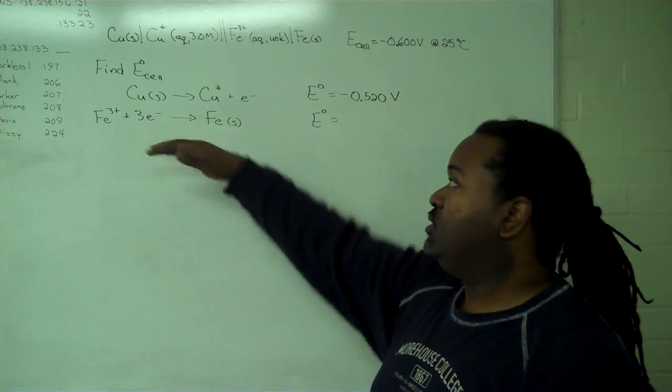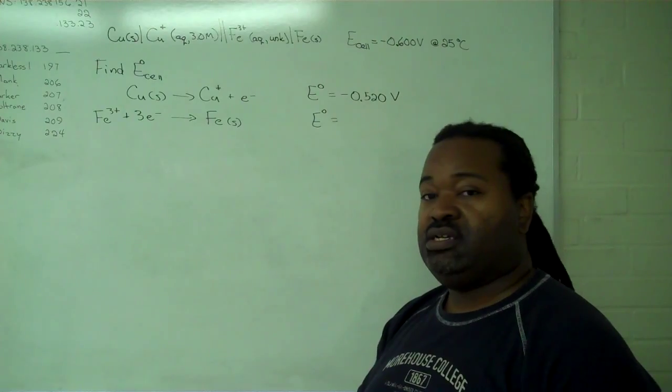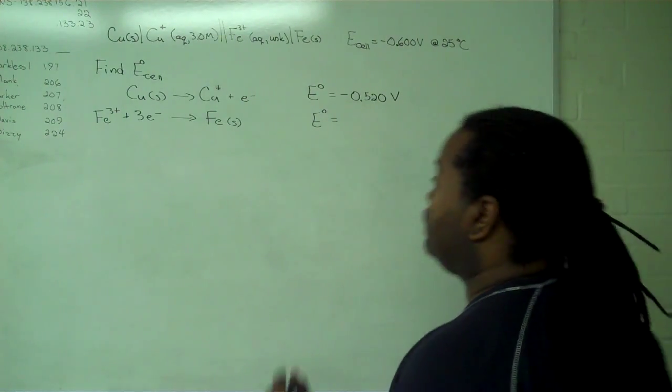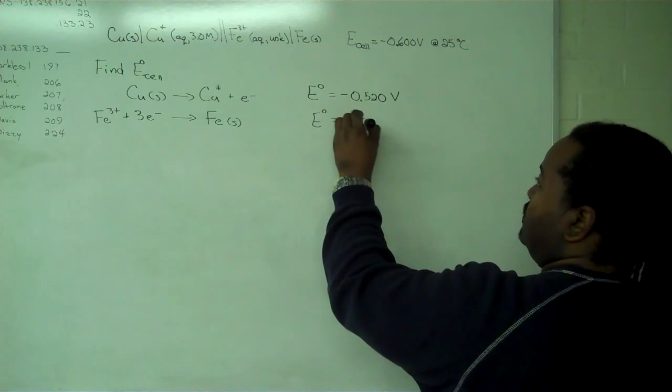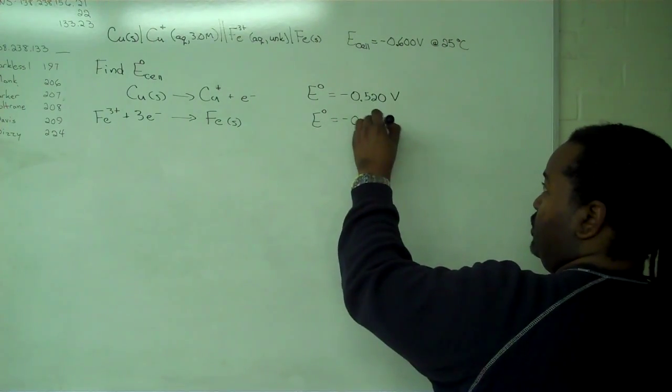The iron reaction is reduction already. So when we find that in the table, we can simply copy it over, and that is minus 0.04 volts.